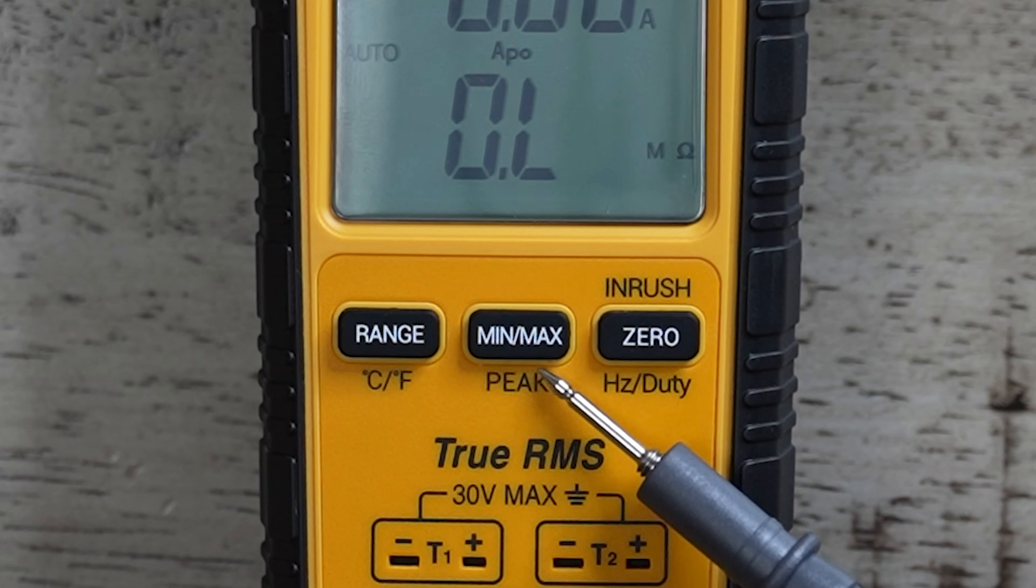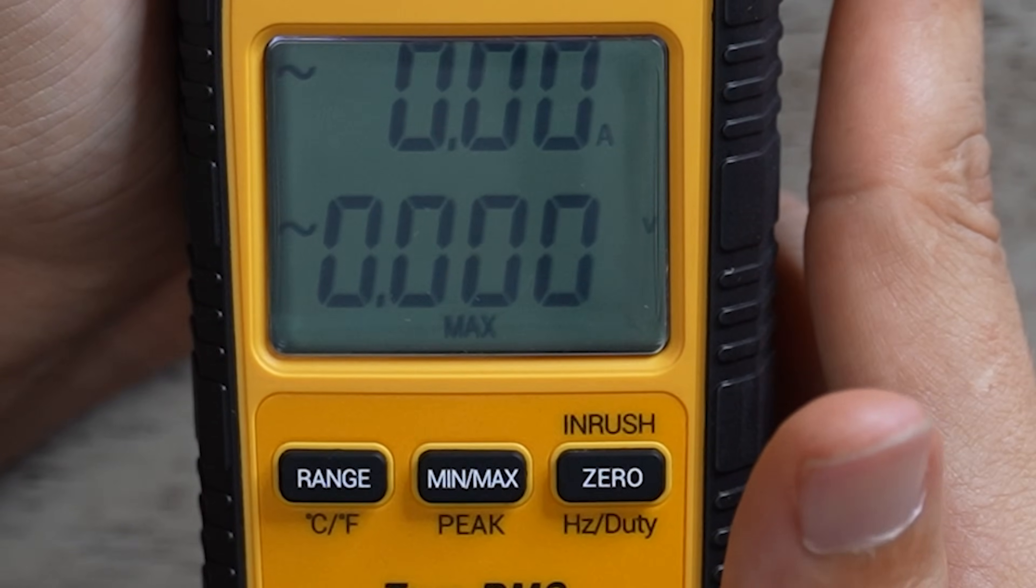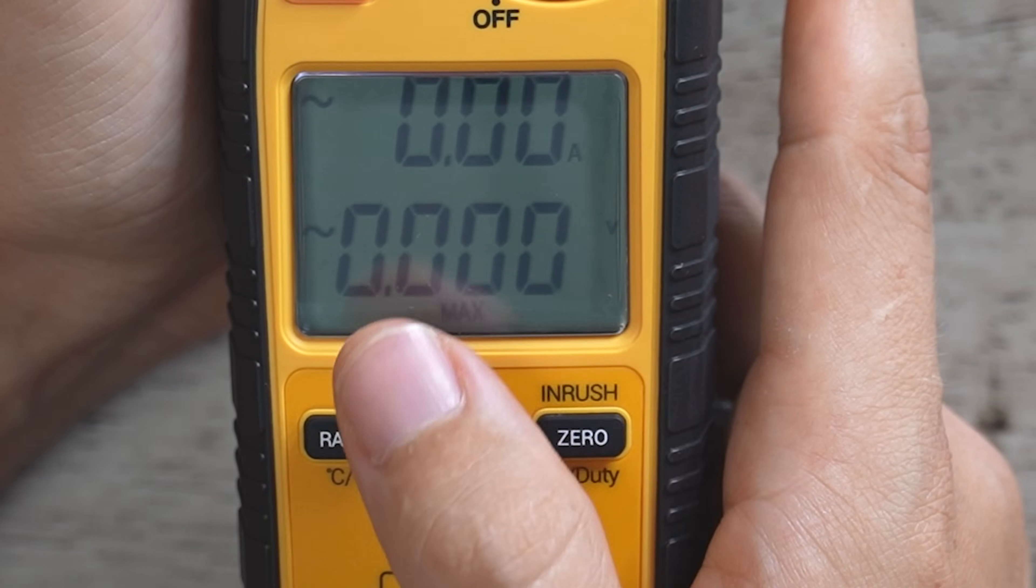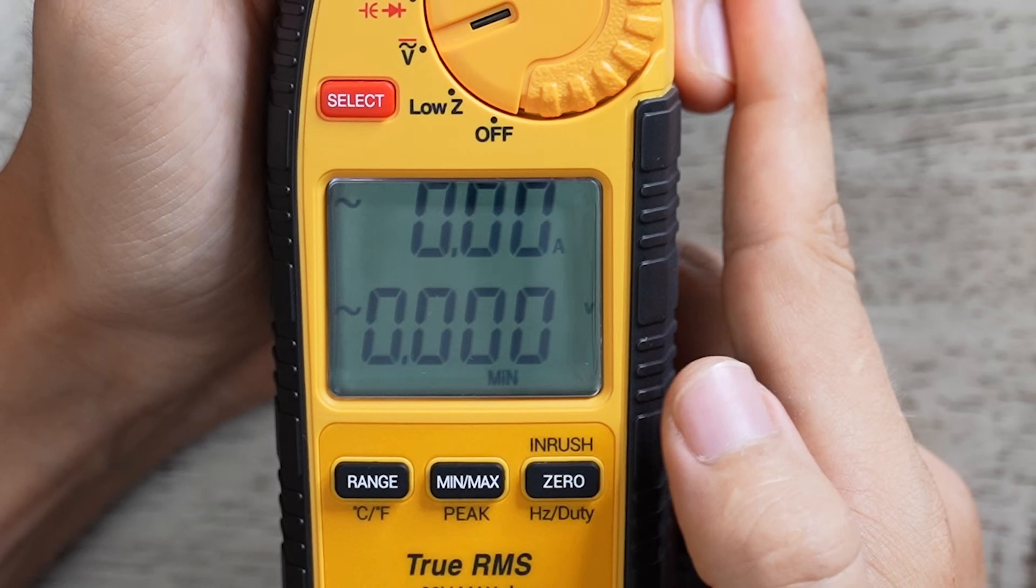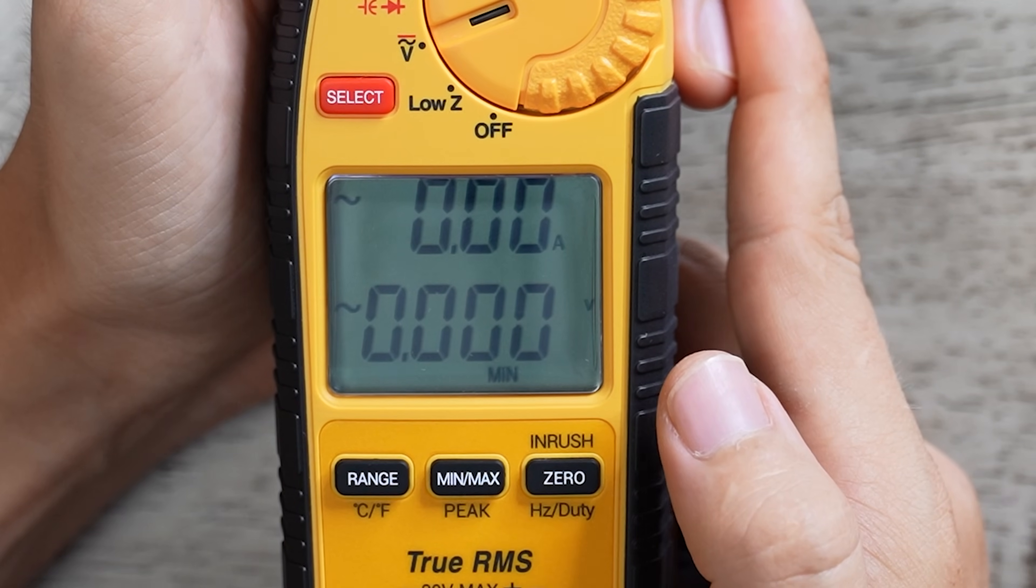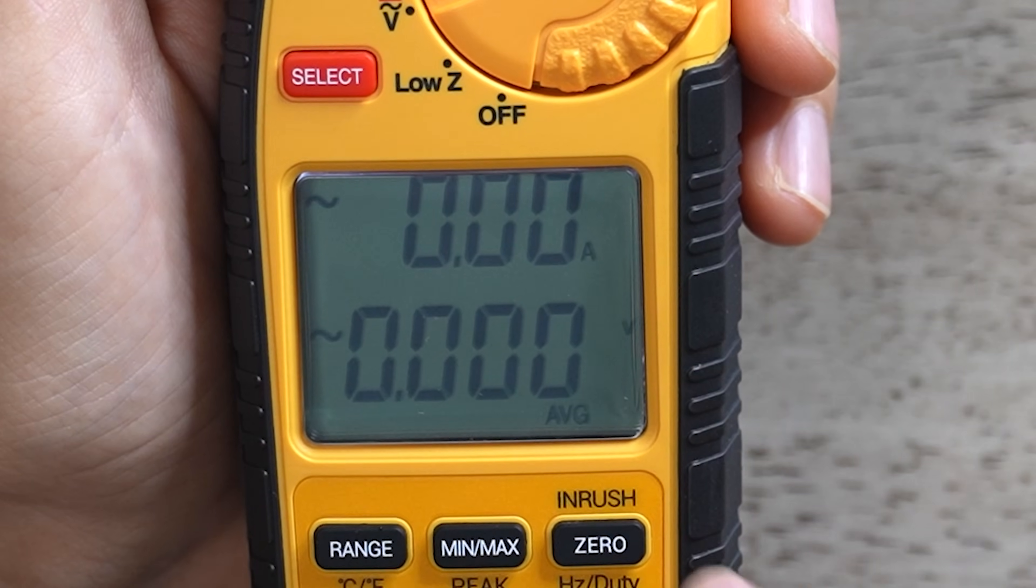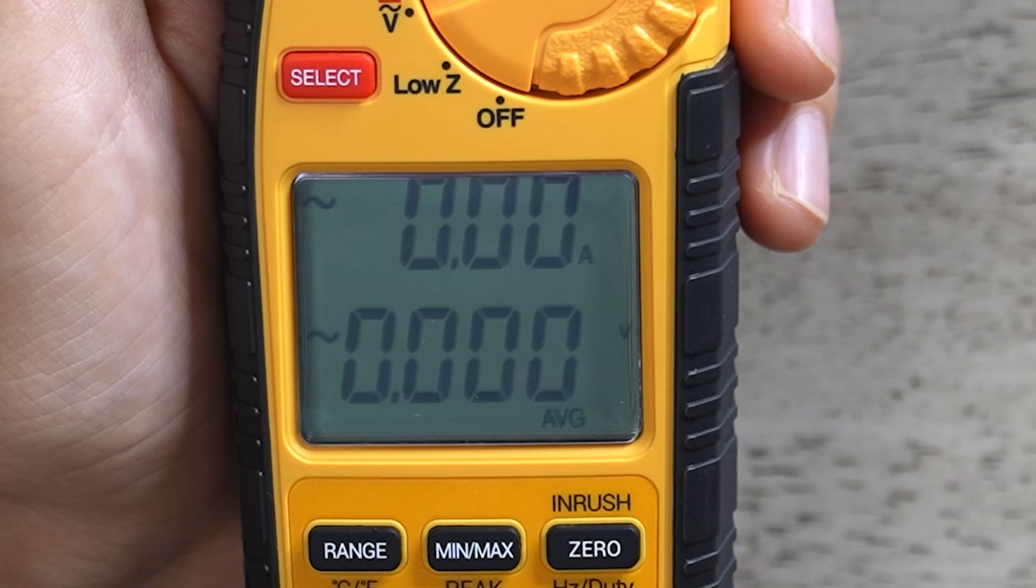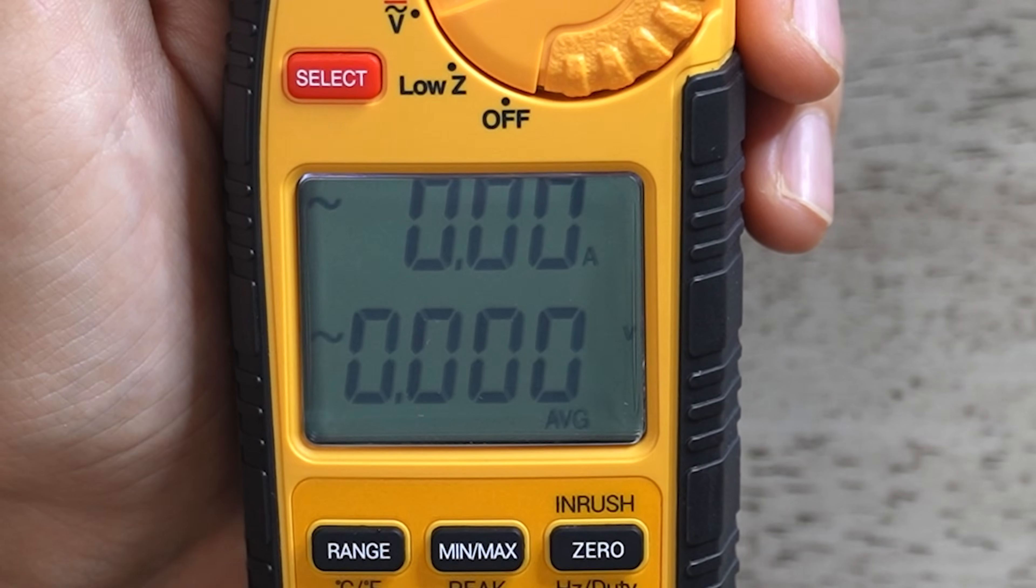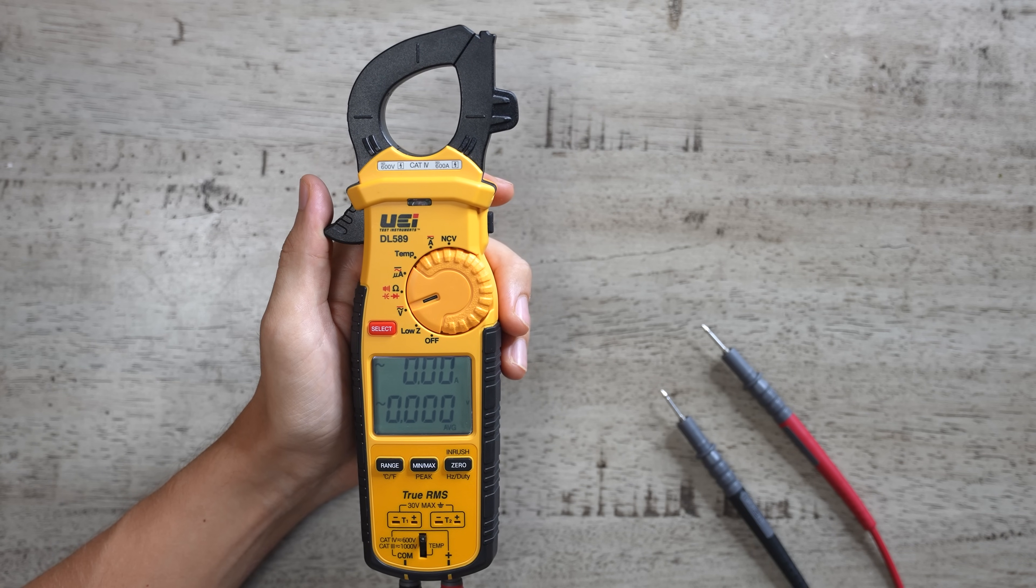Next up, we have the minimum, maximum, average, and peak button. If you select max, while you're measuring voltage, amperage, or resistance, whatever reading that the meter will register that is the highest, that one is the one that's going to stay on the display. Min is the same thing, except it records the lowest reading that the meter registers. And then we have average. If whatever it is that you're measuring is fluctuating, let's say you're measuring an outlet, and the voltage is bouncing around from 115 to 122, the average would simply give you the average read, which would probably be around 117 volts.